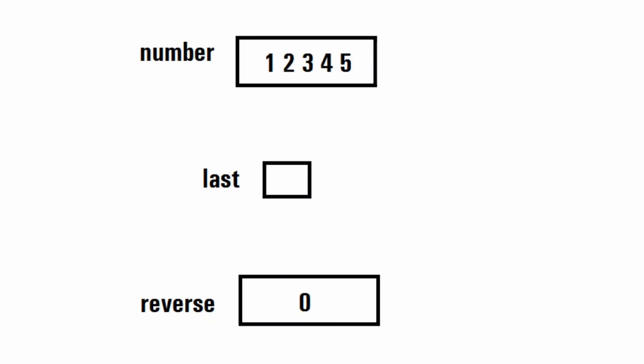Let's assume we have the number 12345 stored in a variable called 'number'. I have another variable 'last' which is empty right now, and a variable 'reverse' initialized to zero. First, I will go to the last digit of this number, which is 5, and store it into 'last'. Then I multiply 'reverse' by 10 and add 'last' to it. Since reverse is zero, multiplying by 10 gives zero, and adding 5 gives reverse as 5.